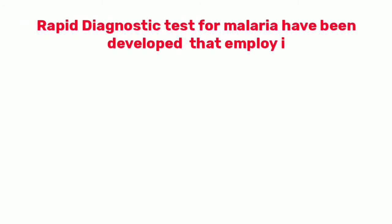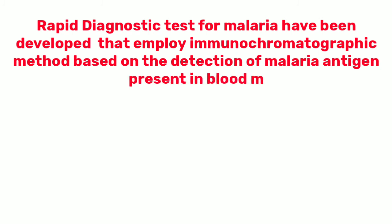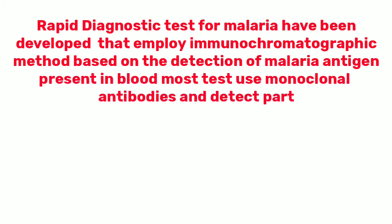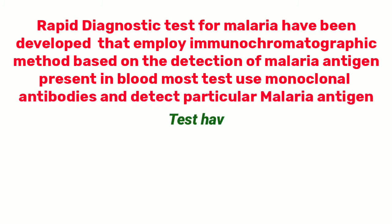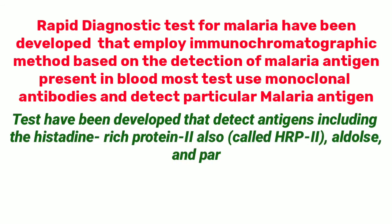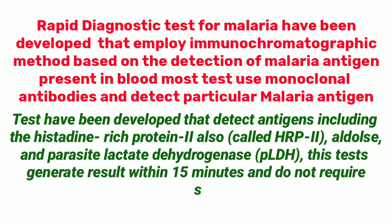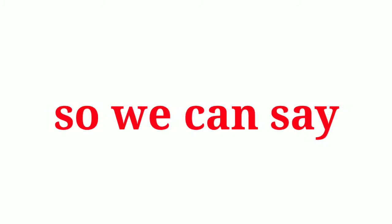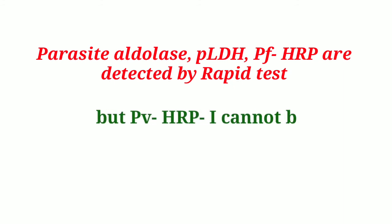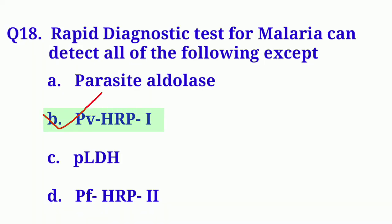Rapid diagnostic tests for malaria employ immunochromatographic methods based on the detection of malarial antigens present in blood. Most tests use monoclonal antibodies and detect particular malarial antigens, including histidine-rich protein 2 (HRP2), aldolase, and parasite lactate dehydrogenase (PLDH). These tests generate results within 15 minutes. Parasite aldolase, PLDH, and PfHRP2 are detected by rapid tests, but PBHRP1 cannot be detected by rapid diagnostic tests. So our correct option is Option B: PBHRP1.